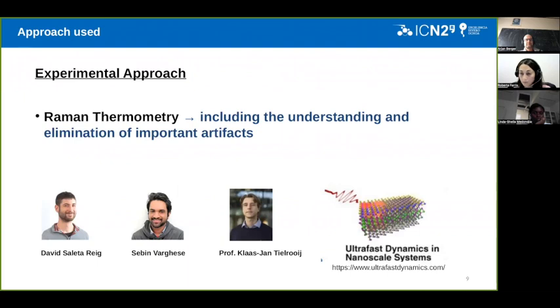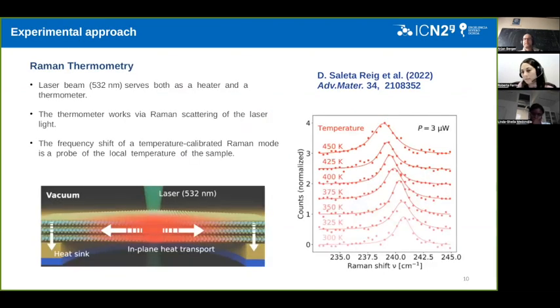I want to thank the people involved in this project, in particular David and Sabin, the two PhD students that perform the measurement, make the samples, and analyze the data, and also my co-supervisor, Klaas, which is the leader of the Ultrafast Dynamics Nanoscale System Group at ICN. For the experiment, they use the Raman thermometry, which is one of the most used techniques for computing thermal properties, and it utilizes the Raman scattering effect of the light.